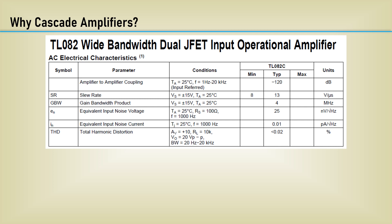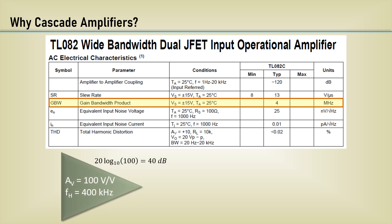Take this example, the TL082 op amp, that has a gain bandwidth product of 4 MHz. Let's say we desire a gain of 100 V per volt, or 40 dB, and an upper cutoff frequency of 400 kHz. We simply divide the Gain Bandwidth Product by the Gain to get the high cutoff frequency. Whoa! It's only 40 kHz!